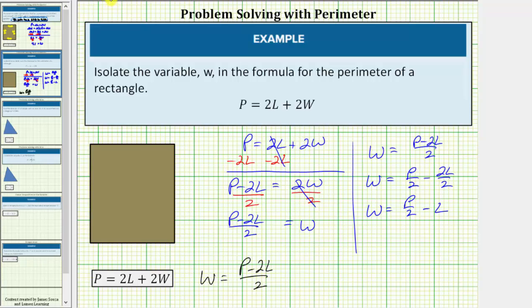So we can also express the formula as w equals p divided by 2 minus l. These two equations are equivalent just in a different form. I hope you found this helpful.